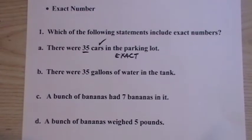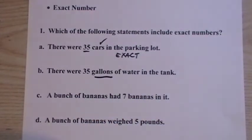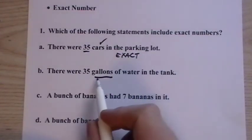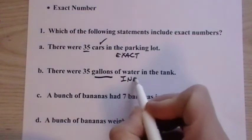There were 35 gallons of water in the tank. Well, gallons is a volume. To determine that volume we had to do a measurement. So this would be inexact. It's a measurement.